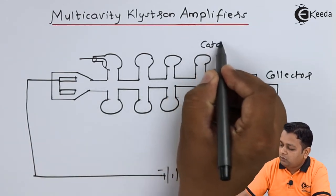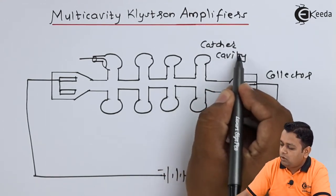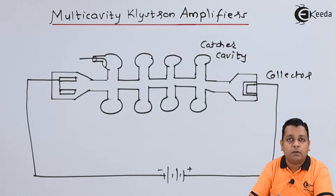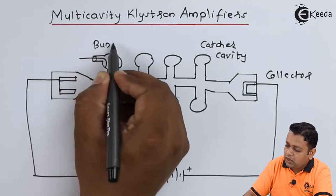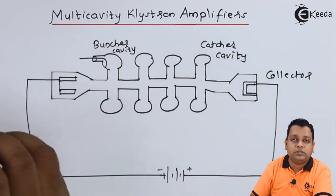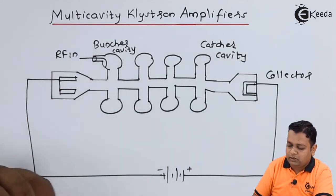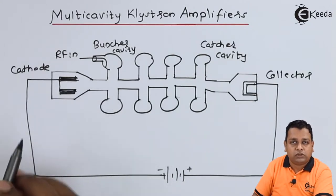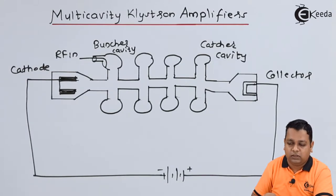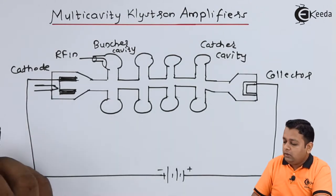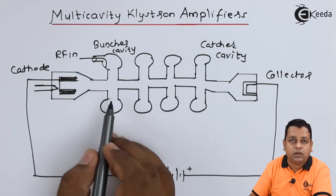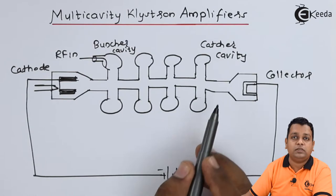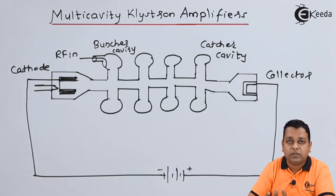The fourth cavity acts as the catcher cavity or output cavity. The first cavity is responsible for velocity modulation and is called the buncher cavity or input cavity. To the buncher cavity we provide the RF input signal to be amplified — RF in. The two rods are the electron beam focusing rods, also called the electron gun. The heating element is shown, and these are the gap spacings between the grids of the re-entrant cavities. In this diagram, toroidal-type re-entrant cavities are drawn.